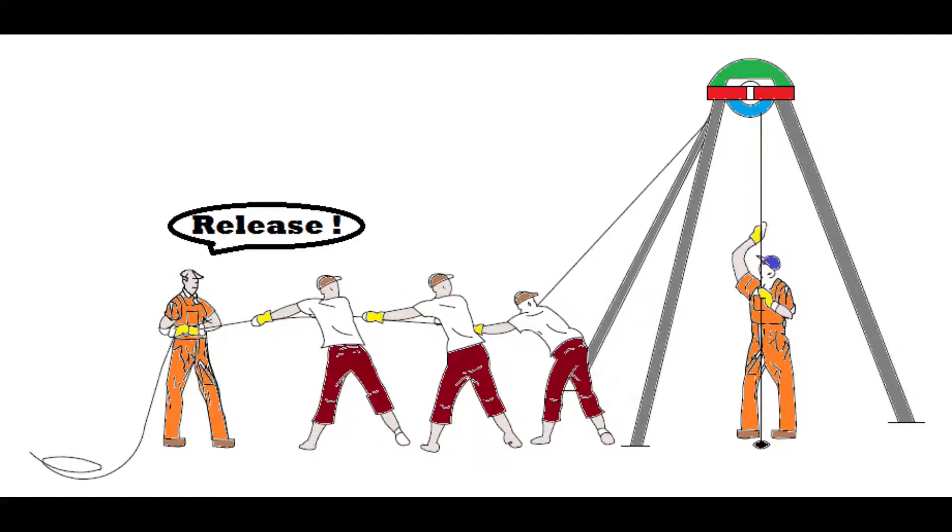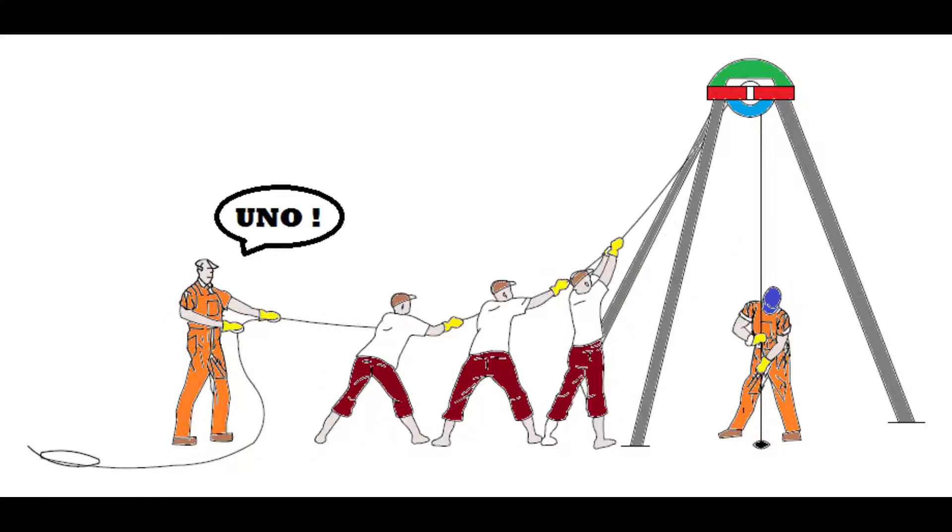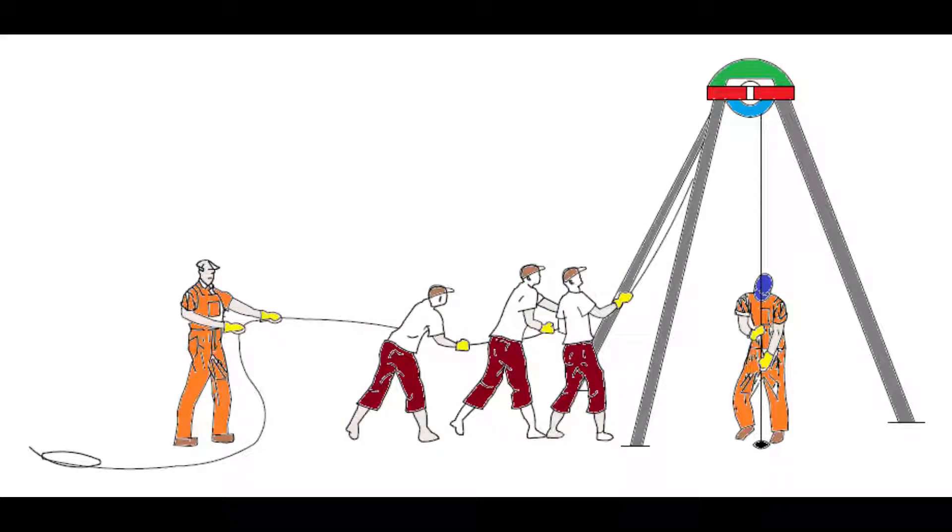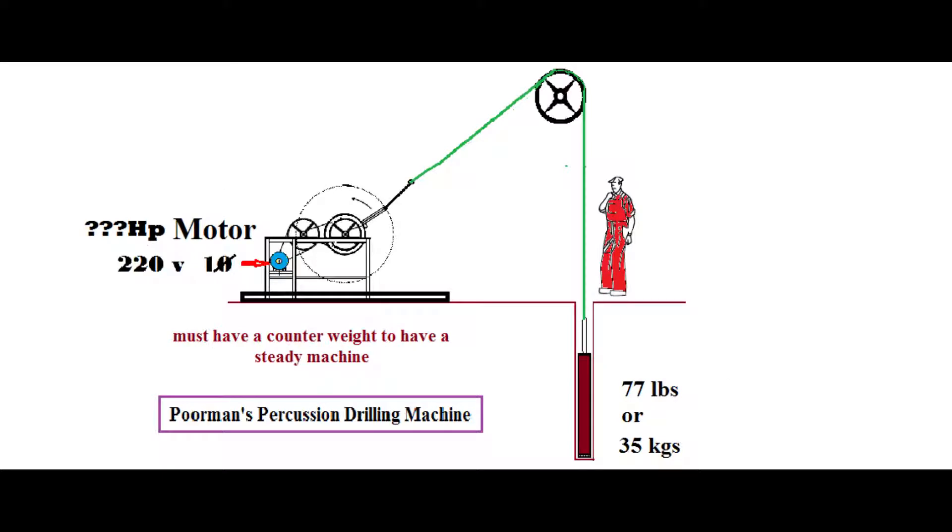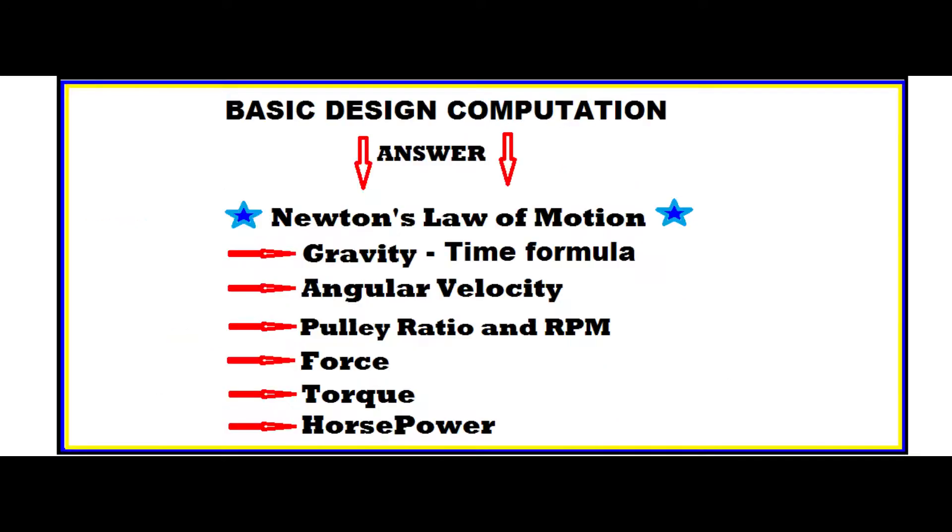What motor rating can be used or what horsepower of an electric motor can be installed? We need Newton's law of motion, of course, to arrive at a horsepower rating for a particular weight of the hammer. We need to compute the time, angular velocity or RPM, force, and then torque.